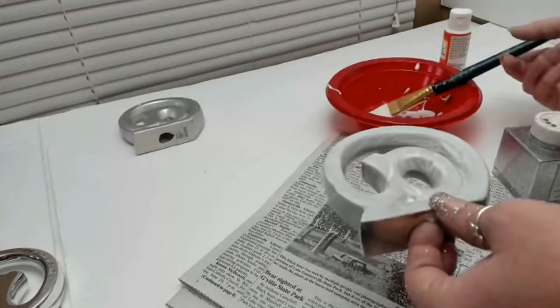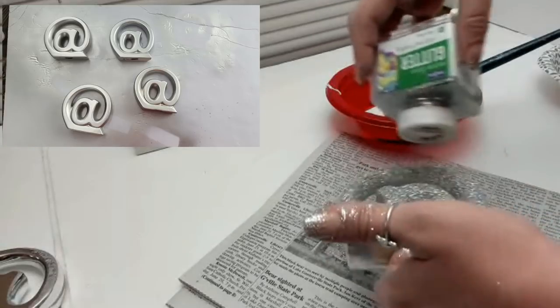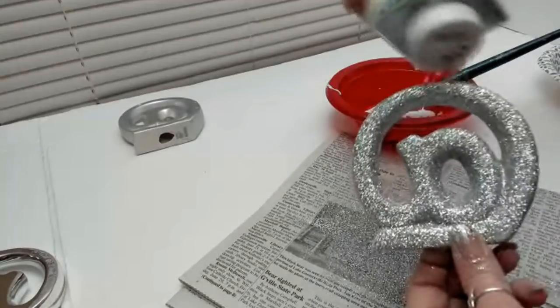So what I ended up doing was painting mine all silver, and then I went over them with Mod Podge and glitter and I let that dry. I reapply the Mod Podge so that the glitter doesn't shed.